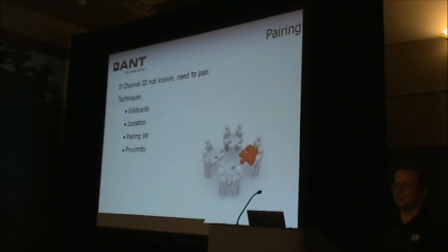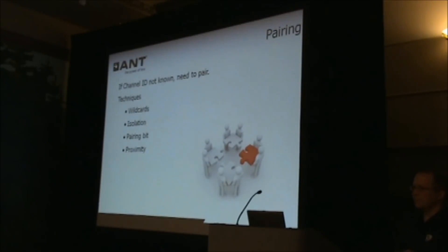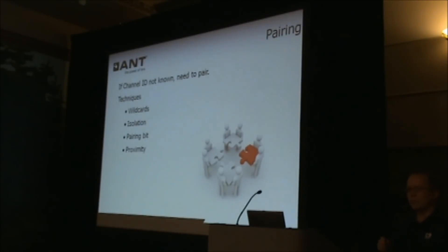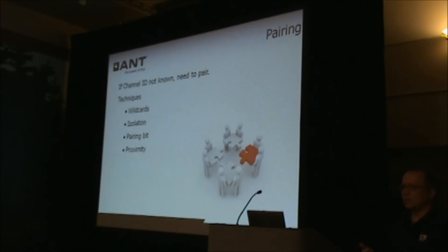We've added mechanisms to get around that problem. The pairing bit is one — you can specify a bit within the channel ID indicating the device is in pairing mode, eliminating other devices in the area provided they aren't also pairing. The big disadvantage, and why it hasn't been widely adopted, is that it requires a user interface on both master and slave to put the device into pairing mode, which isn't always an option with sensors. Buttons are expensive and introduce an extra step the user must do correctly.